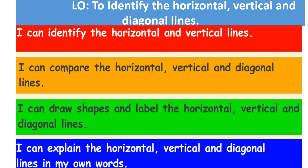Success criteria: I can identify the horizontal and vertical lines. I can compare the horizontal, vertical, and diagonal lines. I can draw shapes and label the horizontal, vertical, and diagonal lines, and I can explain the horizontal, vertical, and diagonal lines in my own words.